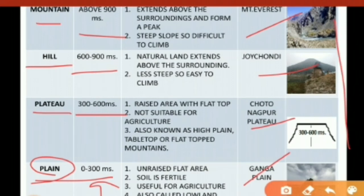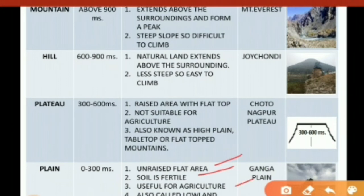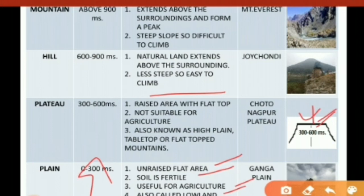Now the characteristic features of those physical landforms. Plains are flat regions with fertile soil, useful for agriculture, and known as lowlands due to their height. Plateau is a raised area with a flat top, with a height of about 300 to 600 meters. It has a flat-top plain surface but is a rocky surface, so it is not suitable for agriculture. It is also known as high plain, table top, or flat-top mountain.